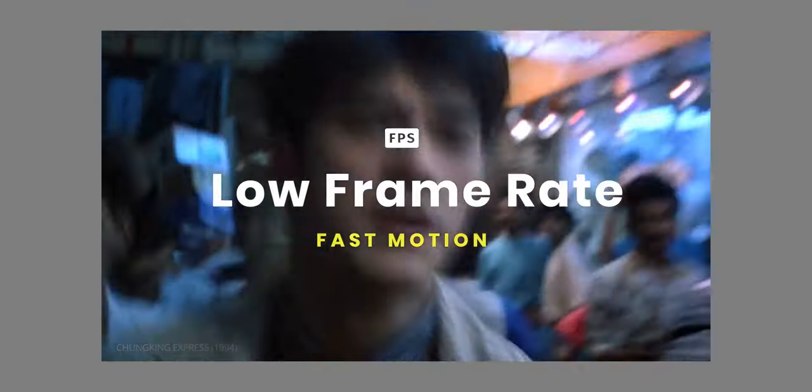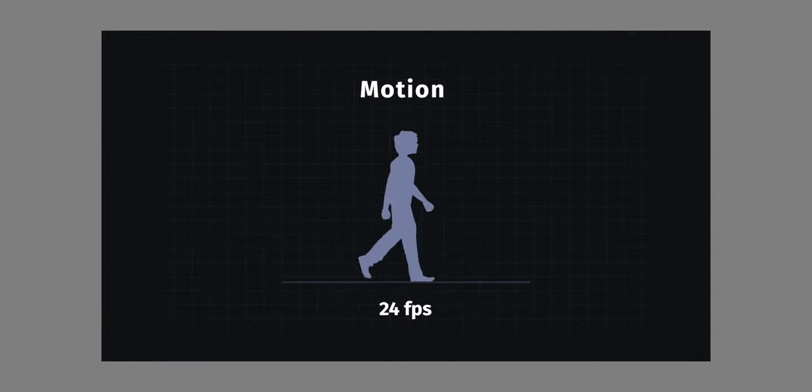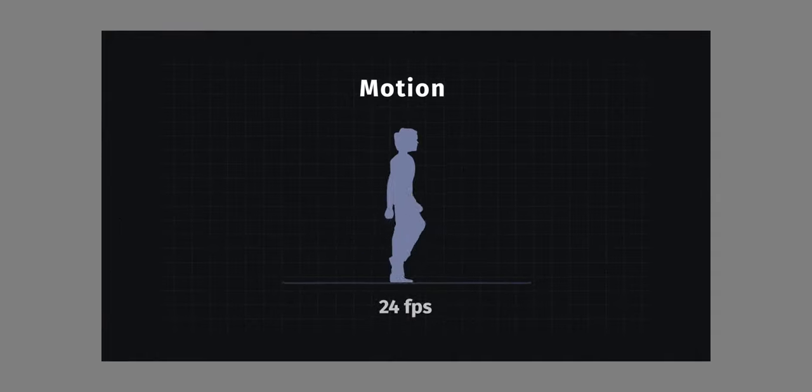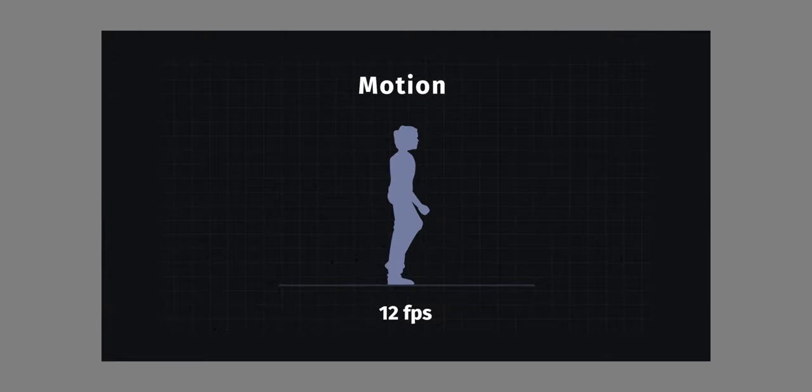If you think shooting at 24 frames per second isn't going to be a thing anymore in years to come, let me know in the comment section below and why. Now, the additional frames in higher frame rate makes motion look smoother. But lower frame rates are going to make your video look choppy because they lack frames.